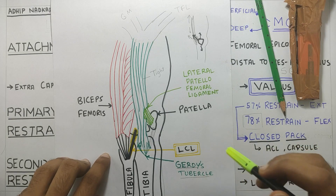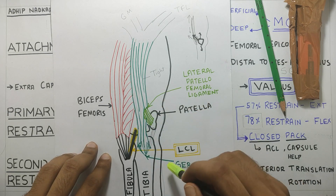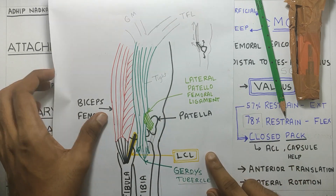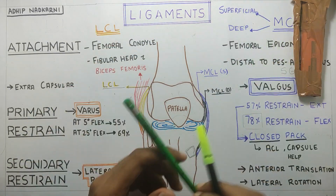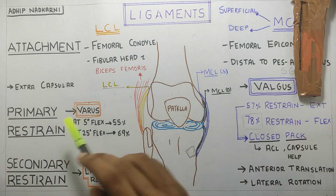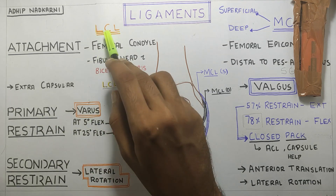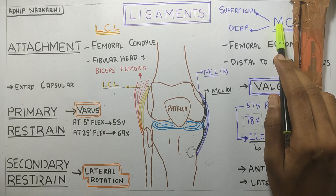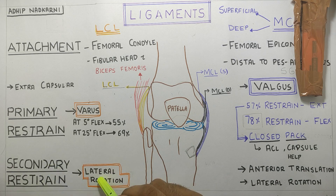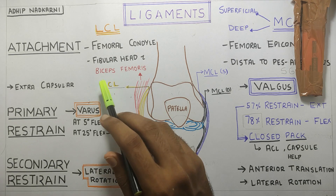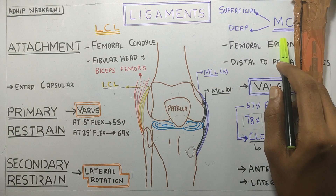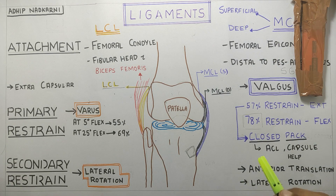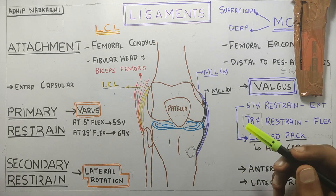To summarize: we talked about the lateral attachments on the knee and the ligaments LCL and MCL — their attachments, primary restraint (varus for LCL and valgus for MCL), secondary restraint (lateral rotation for LCL, and anterior translation and lateral rotation for MCL), and how these restraints vary according to the degree of knee flexion or extension.